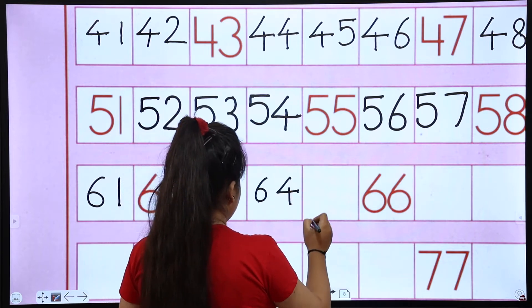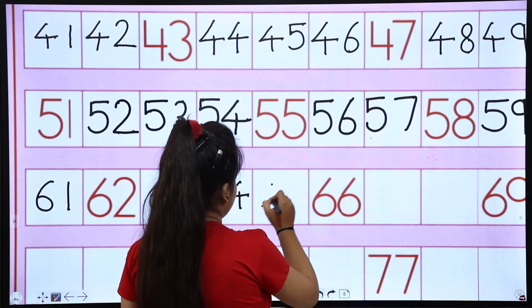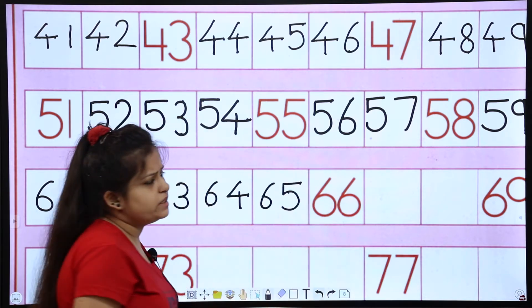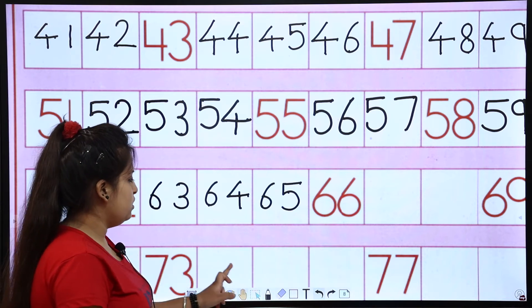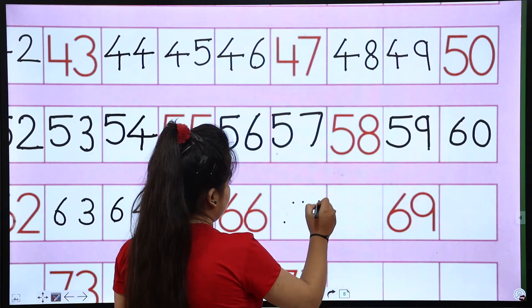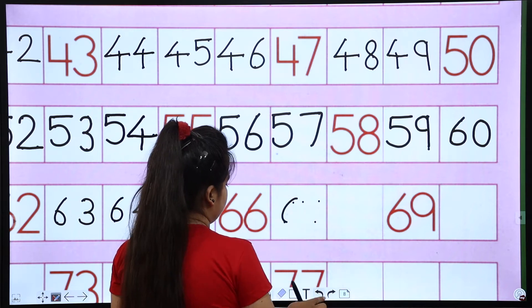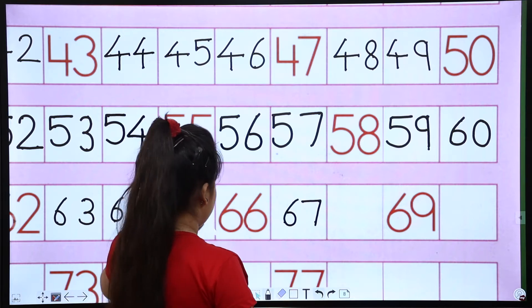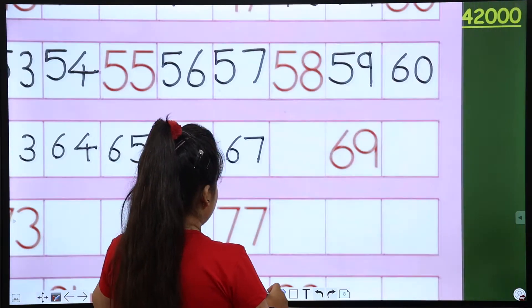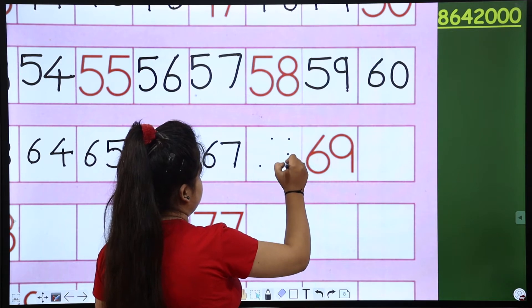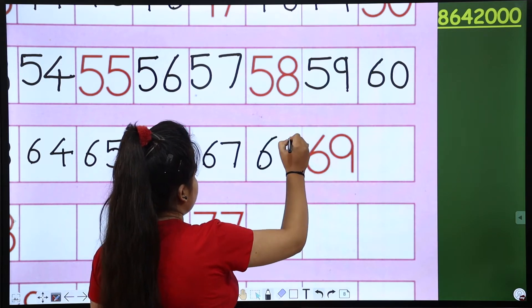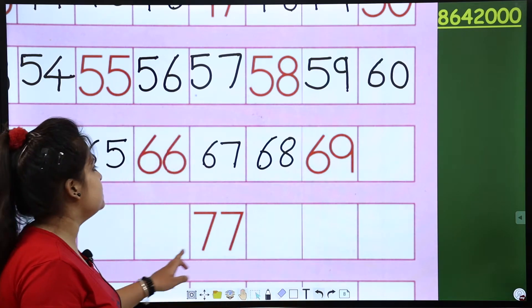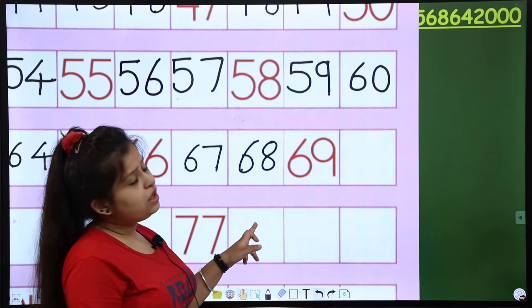65, 65. There. 67, 67. 68, 68. All kids are doing the same with my mom. But we will miss 69. 69 is there. Now what will it be?